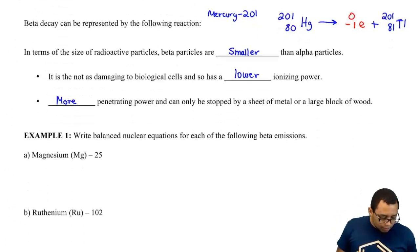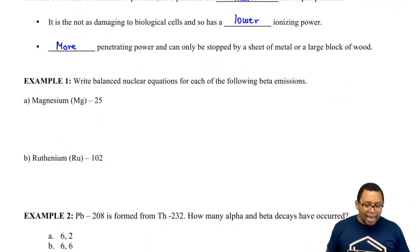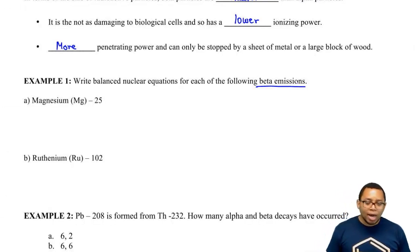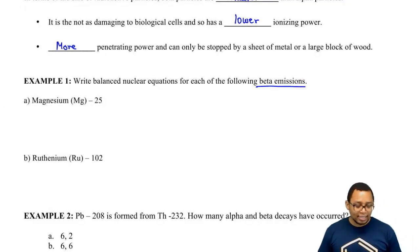So here we have to write the balanced nuclear equations for each of the following beta emissions. Beta decay, beta emissions means that the beta particle will be a product. If they had said beta capture or beta absorption, then it would be a reactant.